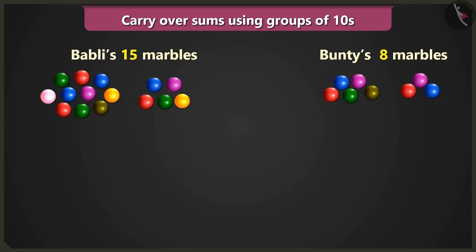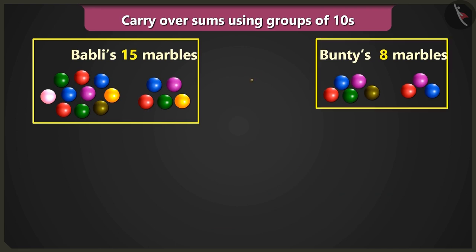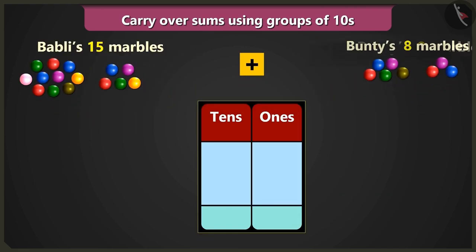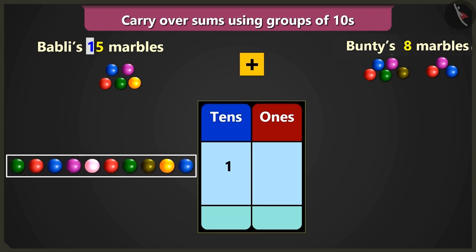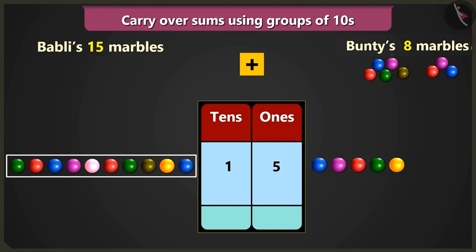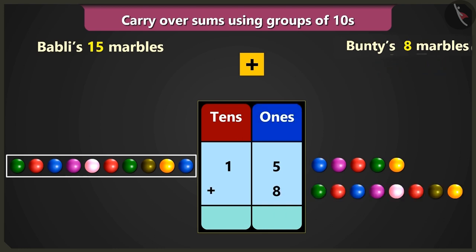Come on, let's add 15 and 8. I have 1 ten and 5 ones — you have 15 marbles. So we will write 1 in the box of tens and 5 in the box of ones. Yes, and you had 8 marbles, so we will write 8 in the box of ones.